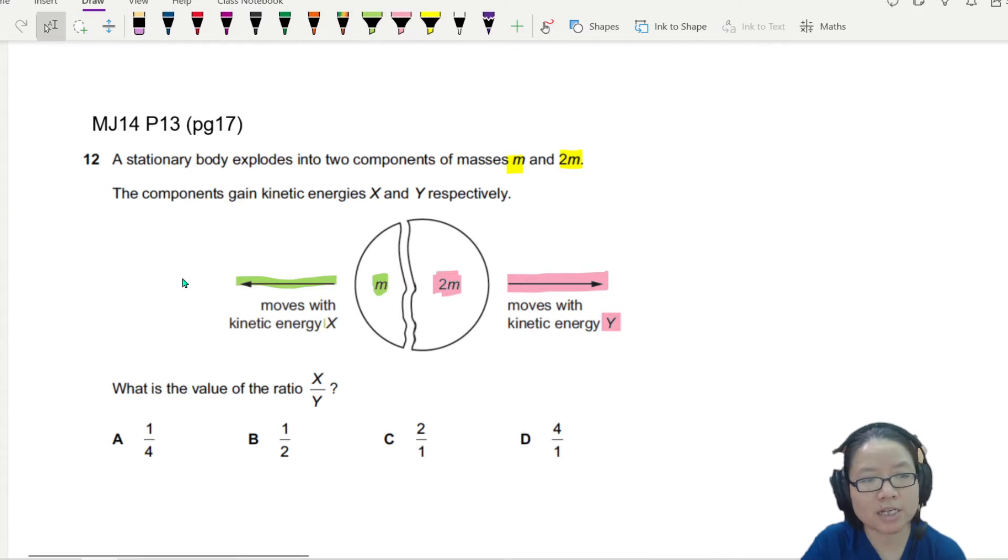Because this is a case of explosion, it's probably some form of explosive or chemical energy that converts itself to kinetic energy. So right now, you are asked to find the ratio of this kinetic energy of x to y.